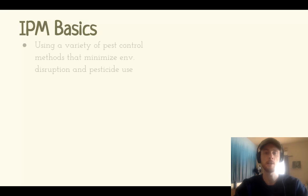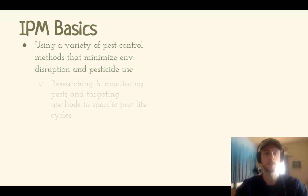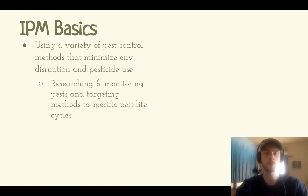The name integrated pest management reminds you that it's an integrated way — a bunch of different methods — to control pests while decreasing pesticide use and hopefully decreasing environmental disruption. It's going to hinge around doing research and monitoring what pests you actually have, so that you can make sure your approaches are targeted specifically to those pests.